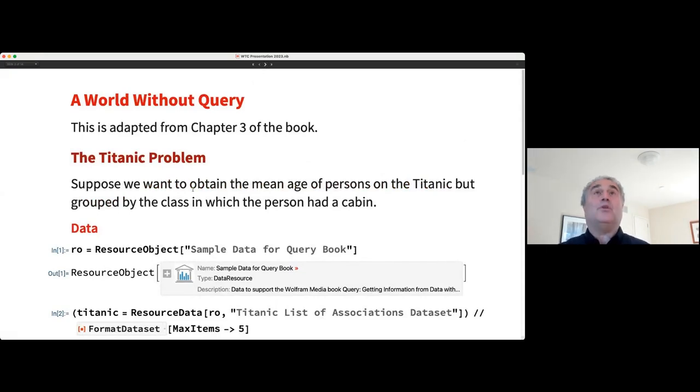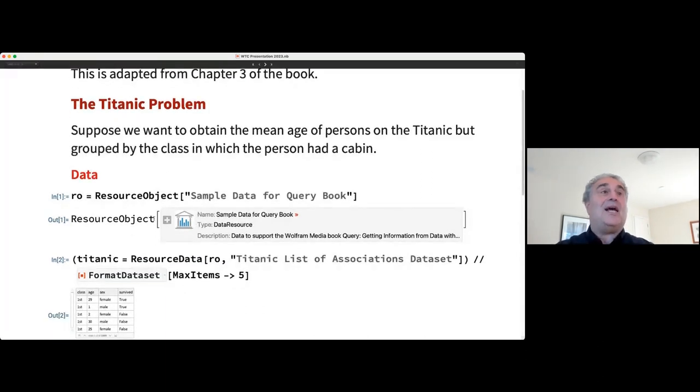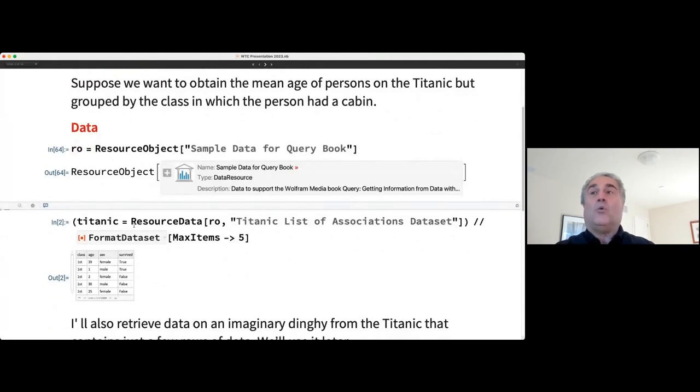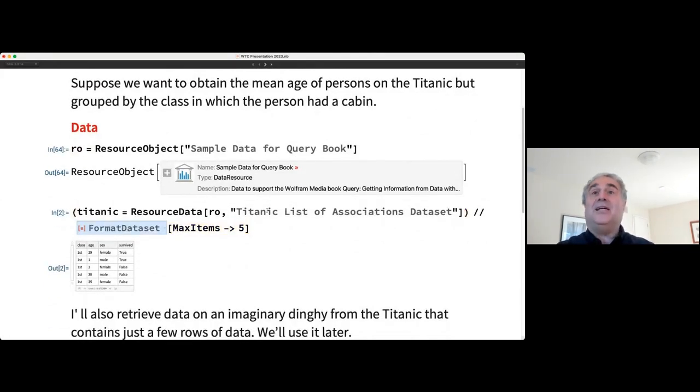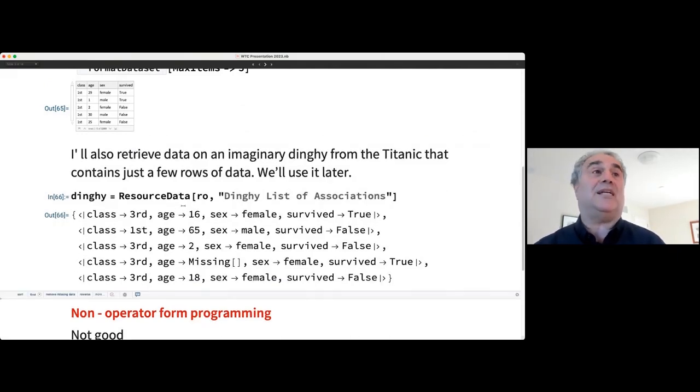All right, so let's start out with the world before there was a query construct, and there is a resource object in the Wolfram Data Repository for the book called Sample Data for Query Book, and we can just download that. I guess you can see that I ran this before, but you're going to trust me that it all works. We're going to download the Titanic in the form of a list of associations data set, and then you'll see here I've got a little resource function that's going to change the number of rows in the data. This is only here to make the presentation a little simpler for you. Otherwise, its default is 20 rows, and that takes up an awful lot of screen real estate.